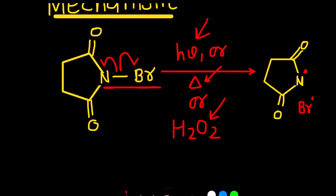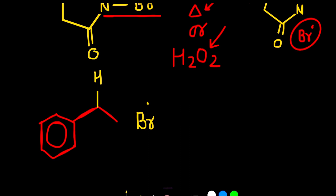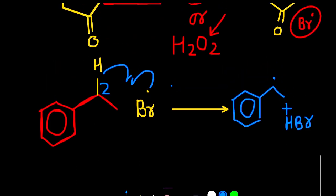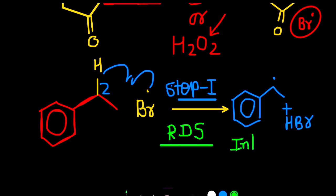In propagation step, bromine radical will abstract benzylic hydrogen and produce benzylic radical and hydrogen bromide. This is step 1, it is the rate determining step of overall reaction. Because here, this intermediate generates.